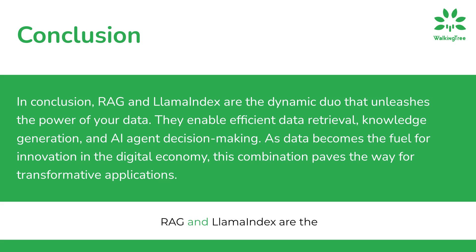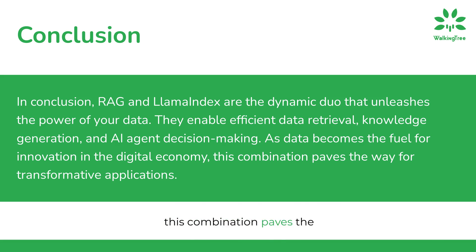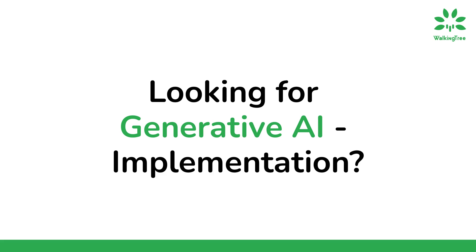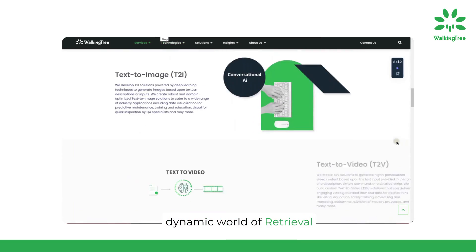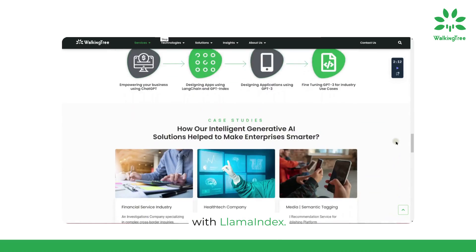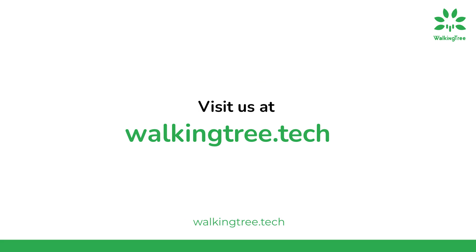RAG and LlamaIndex are the dynamic duo that unleashes the power of your data. They enable efficient data retrieval, knowledge generation, and AI agent decision making. As data becomes the fuel for innovation in the digital economy, this combination paves the way for transformative applications. That wraps up our journey through the dynamic world of retrieval augmented generation with LlamaIndex. If you're intrigued by the limitless possibilities of generative AI and want to know more, simply head over to WalkingTree Tech.